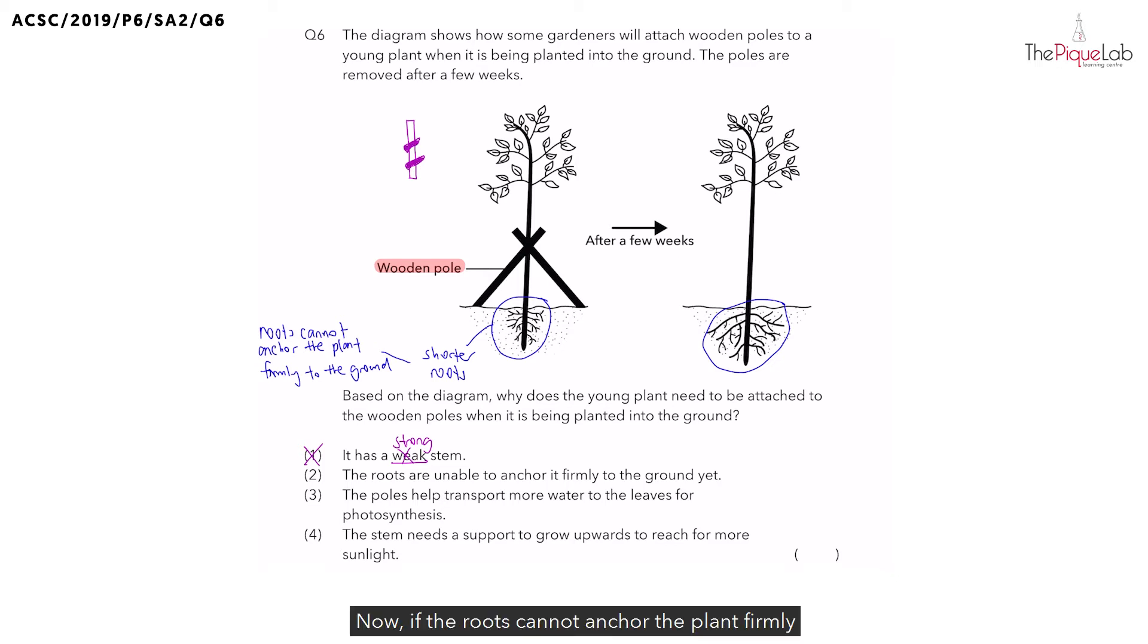If the roots cannot anchor the plant firmly to the ground, what do you think would happen when we remove the wooden poles? Yes, the plant would then be uprooted and it would simply topple over. Once the plant has toppled over, the roots can no longer absorb water. As a result, the plant would eventually die. So, the wooden poles actually help to prevent the plant from being uprooted.